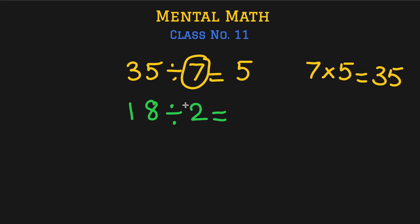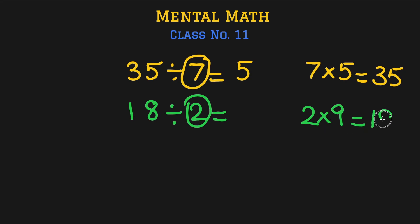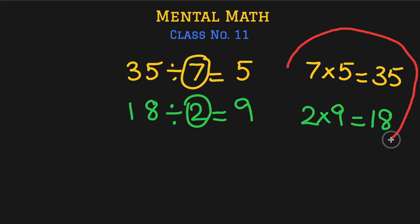Let's do another question: 18 divided by 2. Look at the table of 2 and remember where 18 comes. You will recall that 2 multiplied by 9 equals 18, so the answer is 9. You can find answers to division questions by knowing your multiplication facts — this is super important. Once you know your multiplication facts, it's easy to do even longer questions in your brain.